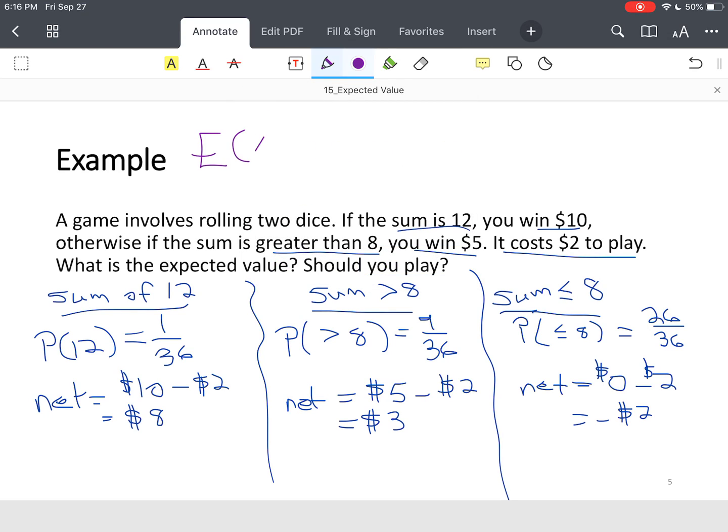We know the winnings or the earnings, so now we can find the expected value. E of X would equal 1 over 36 times $8 plus 9 over 36 times $3, plus 26 over 36. But you're going to lose $2. So I'm going to take my calculator, I'm going to do 1 over 36 times my $8 plus my 9 over 36 times my $3 plus my 26 over 36 times negative $2.